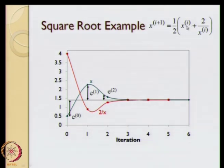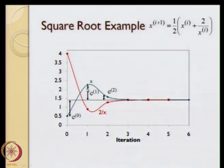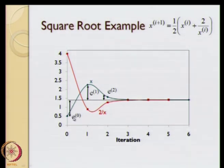These two values correspond to the blue and red curves we saw in the previous module. These are the approximate values of x and how these approximate values change with the iteration number. The black line represents the true solution x star. The difference between the true value and the approximate value is what we call the error. E0 is essentially the difference between 1.414 and 0.5.